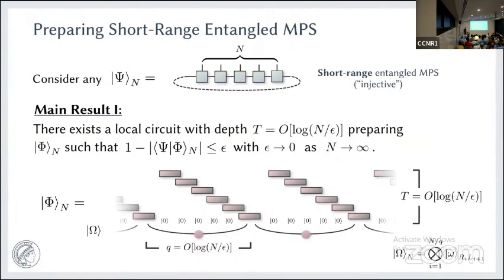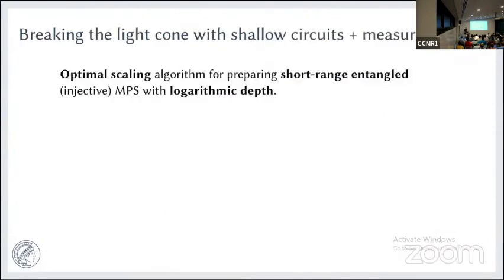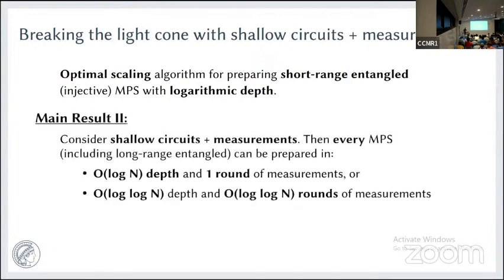This concludes the short-range entangled part. We have a lower bound and an upper bound, so the circuit complexity for this class is resolved. The complexity for the long-range case was already known — it is linear. What remains is to talk about the measurement part: if you include measurements on top of shallow circuits, they can enhance the power and cut down the necessary depth.